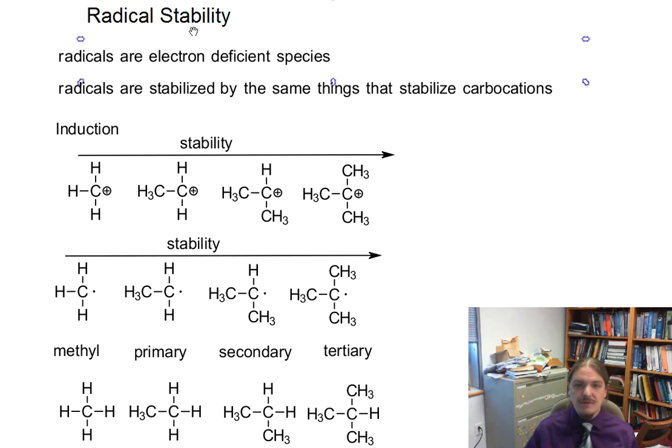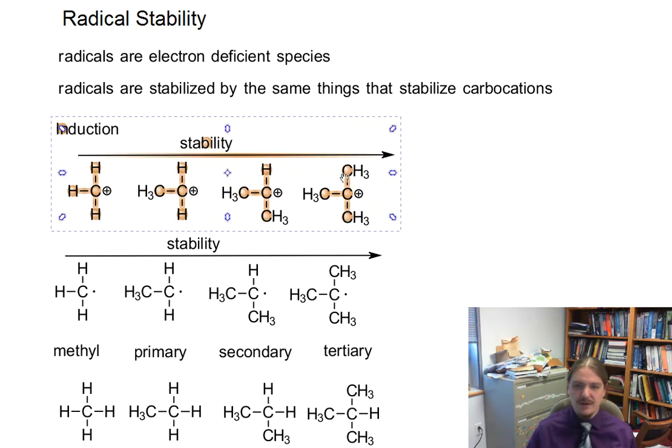It's important for the stability of radicals to understand that radicals are electron deficient species. Like carbocations, the carbon atom in the center of the carbon radical doesn't have as many electrons as it likes. It doesn't have a full octet. So radicals are going to be stabilized by the same things that stabilize carbocations.